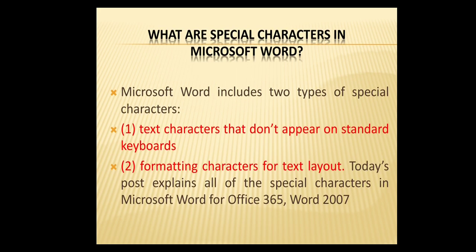So now the discussed content is: what are special characteristics in Microsoft Word, and how to choose symbols and characteristics in Word. Microsoft Word includes two types of special characteristics. The first one is text characteristics, which does not appear on standard keyboards. The second one is formatting characteristics. Text characteristics are used for keyboard symbols, and formatting characteristics are a text layout process.